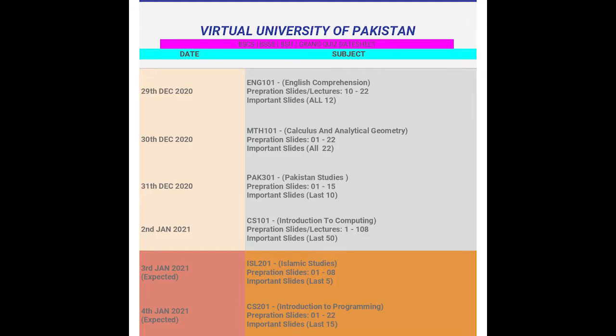The very first paper is on English Comprehension. The due date for this quiz is December 29, 2020, and the time to attempt this quiz is 24 hours. In this online quiz, you will have to attempt 30 MCQs, similar to the other normal quizzes in the LMS window with pop-up blocker. Each MCQ carries an equal one mark. The time to attempt one MCQ is 90 seconds, but you should try to solve it in 60 seconds. The important slides and lectures to prepare for this English Comprehension quiz are all 12 slides you have studied before the midterm.